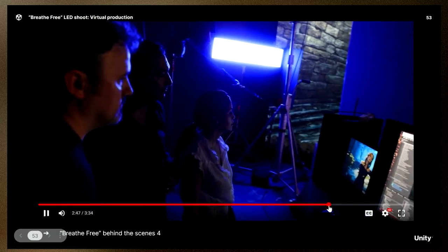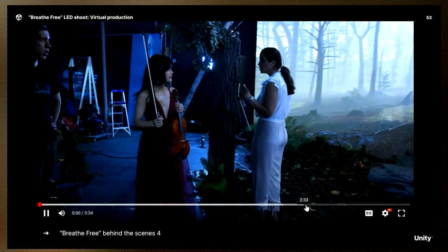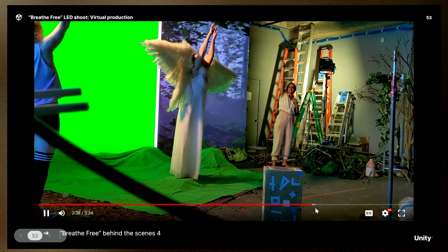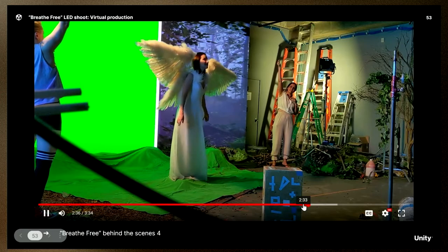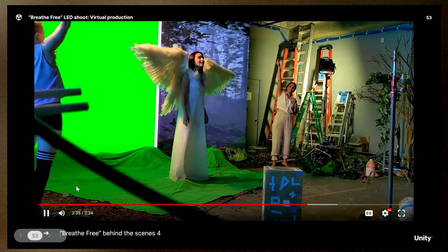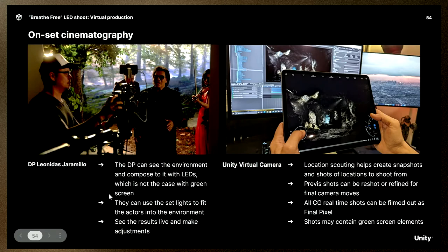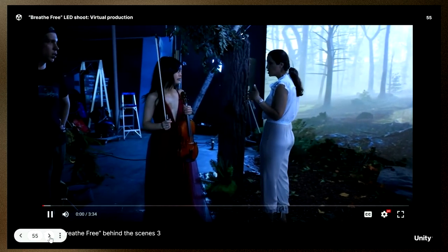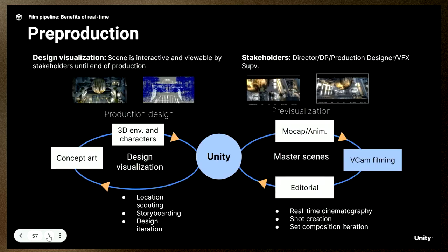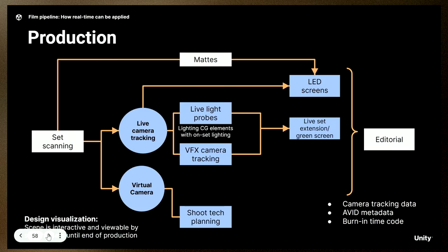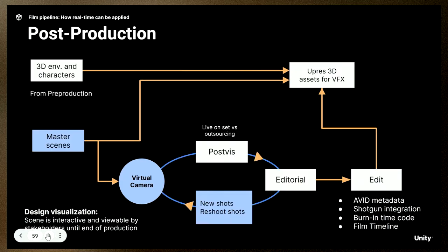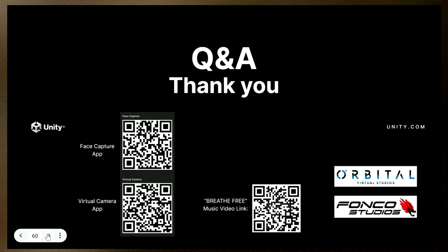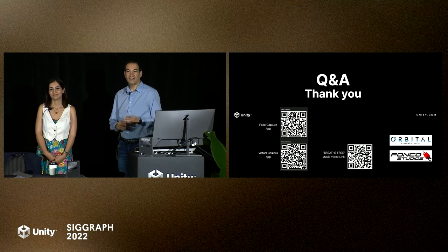Also the green screen on LED was very helpful — my talent opens the wings with filaments. In the interest of time we're going to leave some time for Q&A. I'll skip some of the very detailed pipeline slides — these are about production and pre-production and how you can basically use the real-time engine throughout the whole process and take advantage of the same assets and asset reuse. That's our presentation — thank you. We have about five minutes for questions.